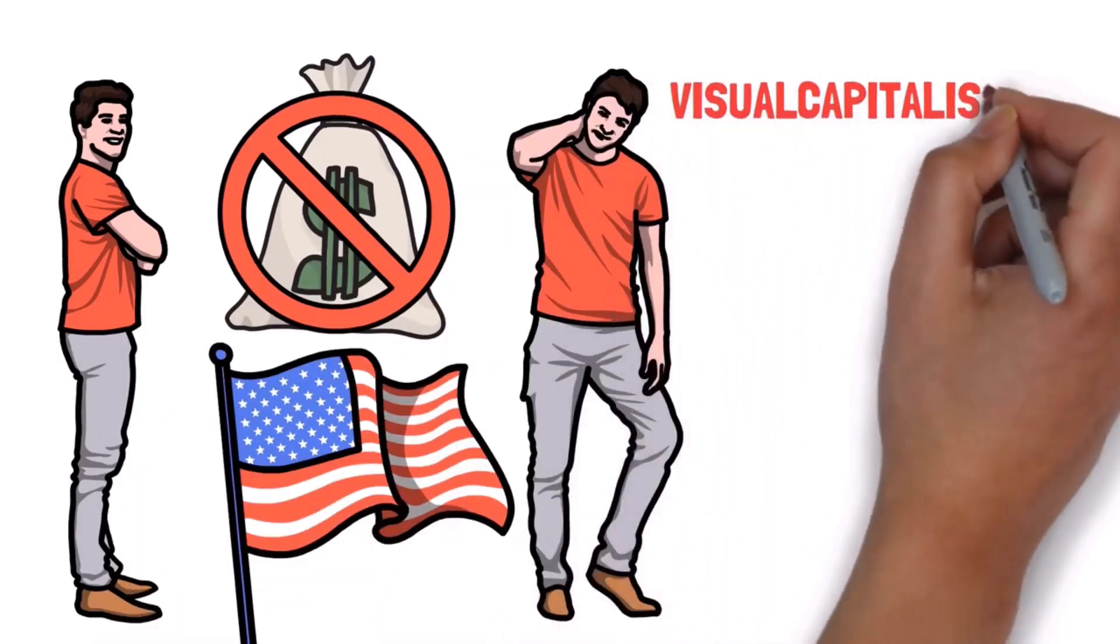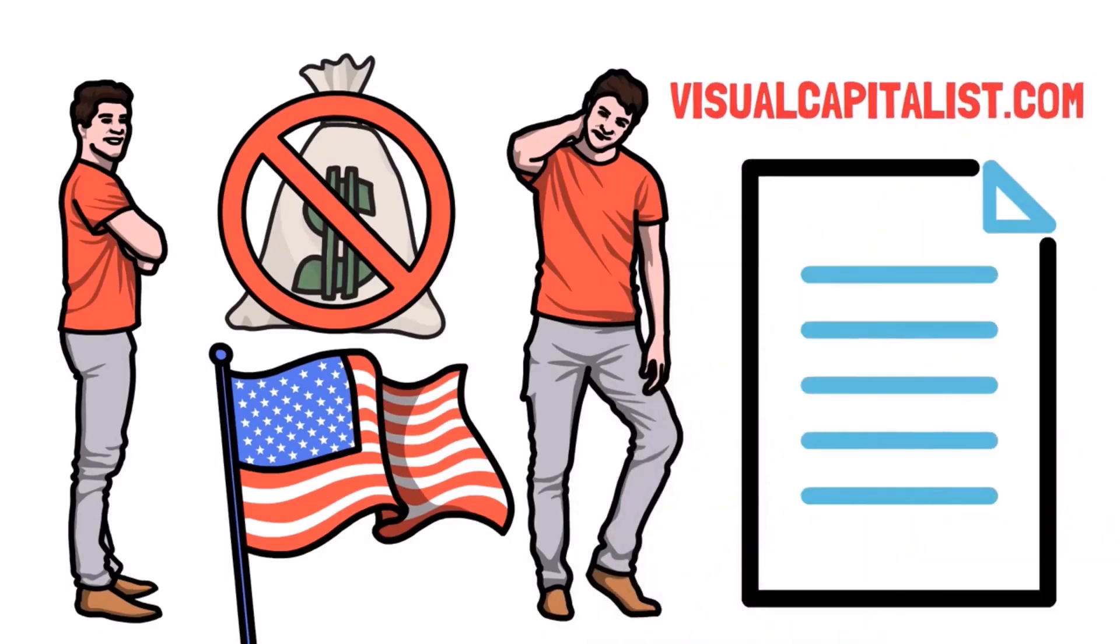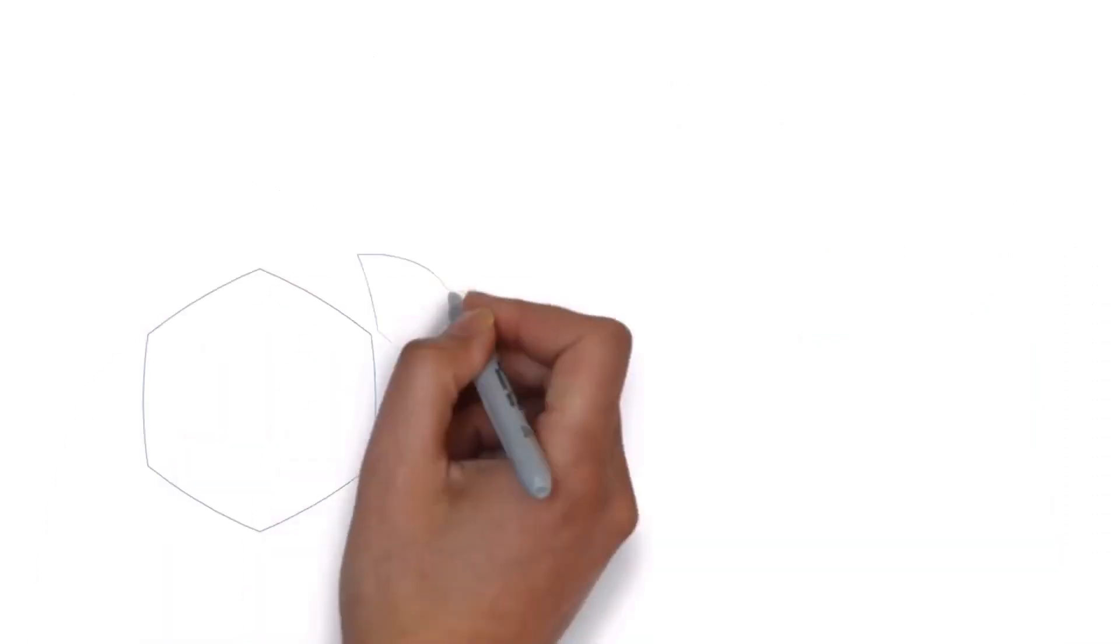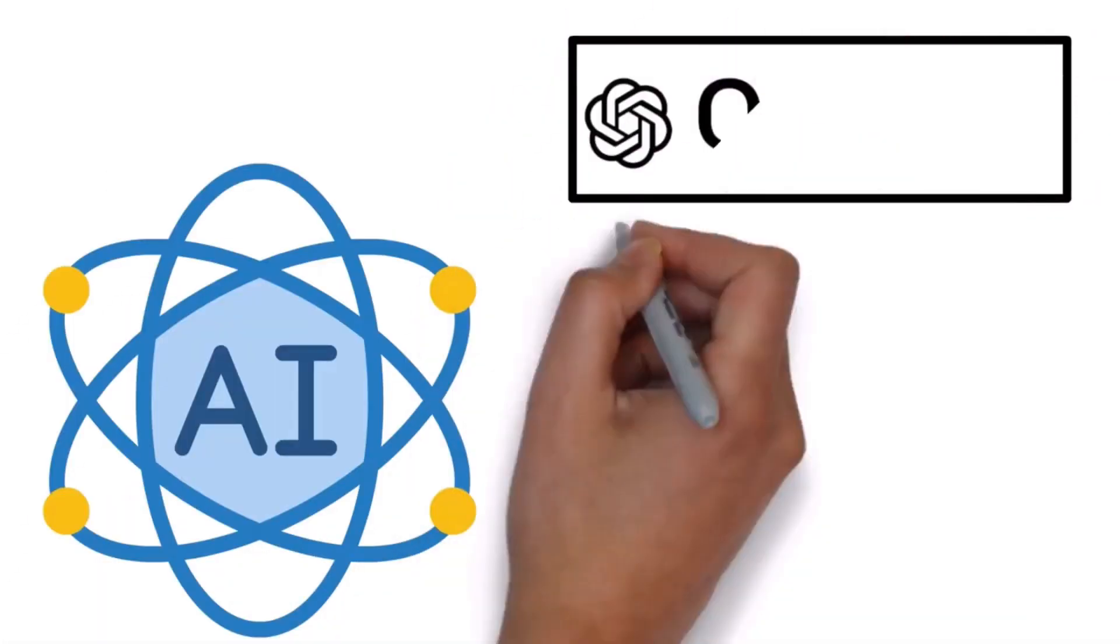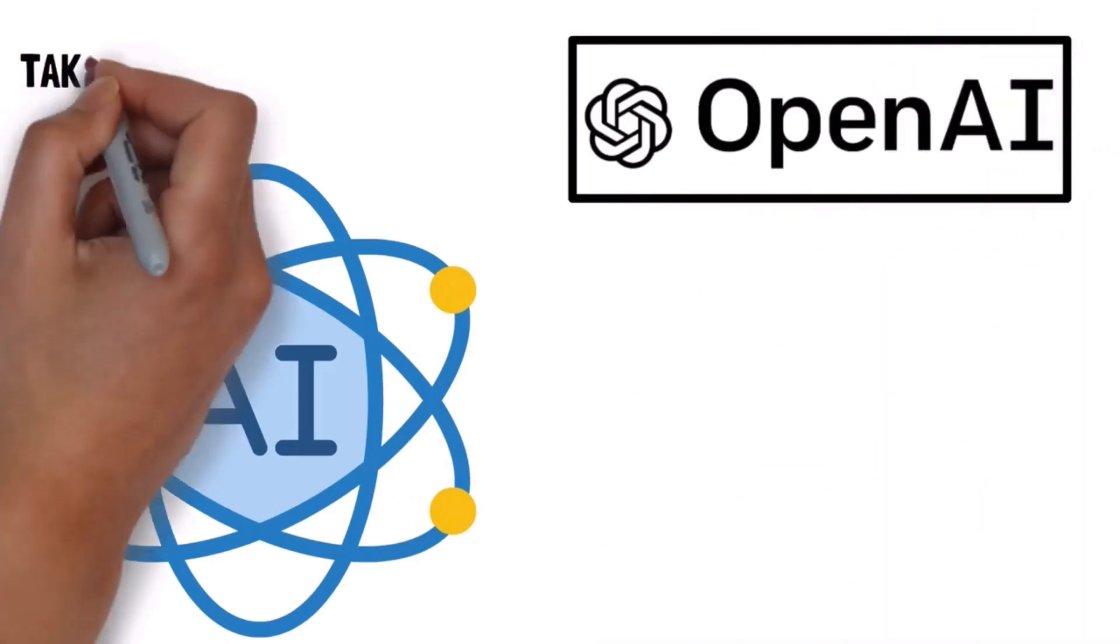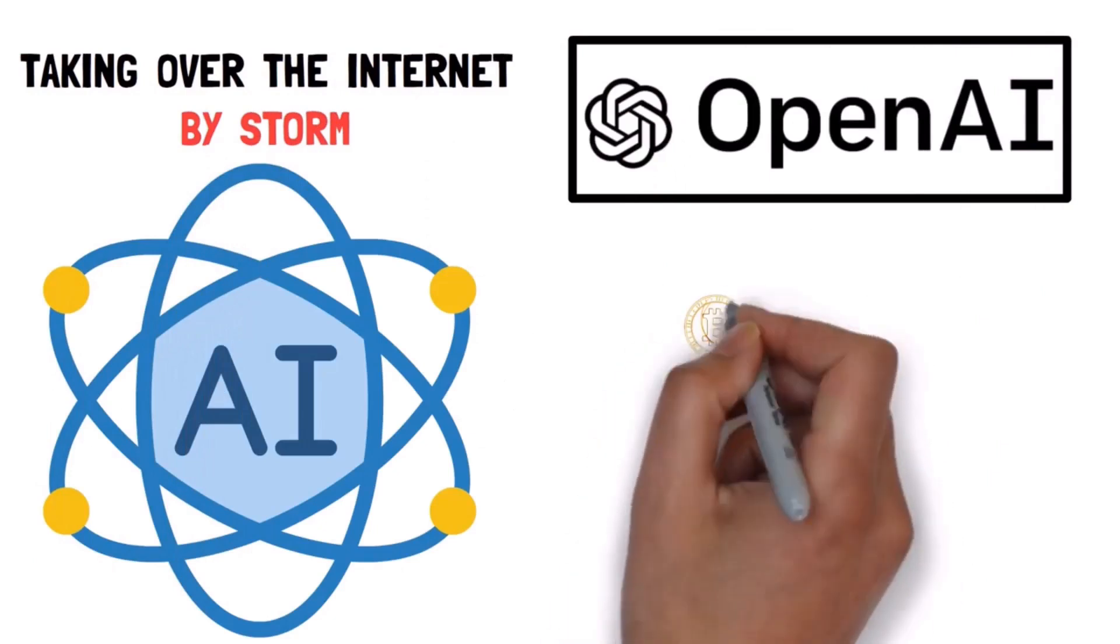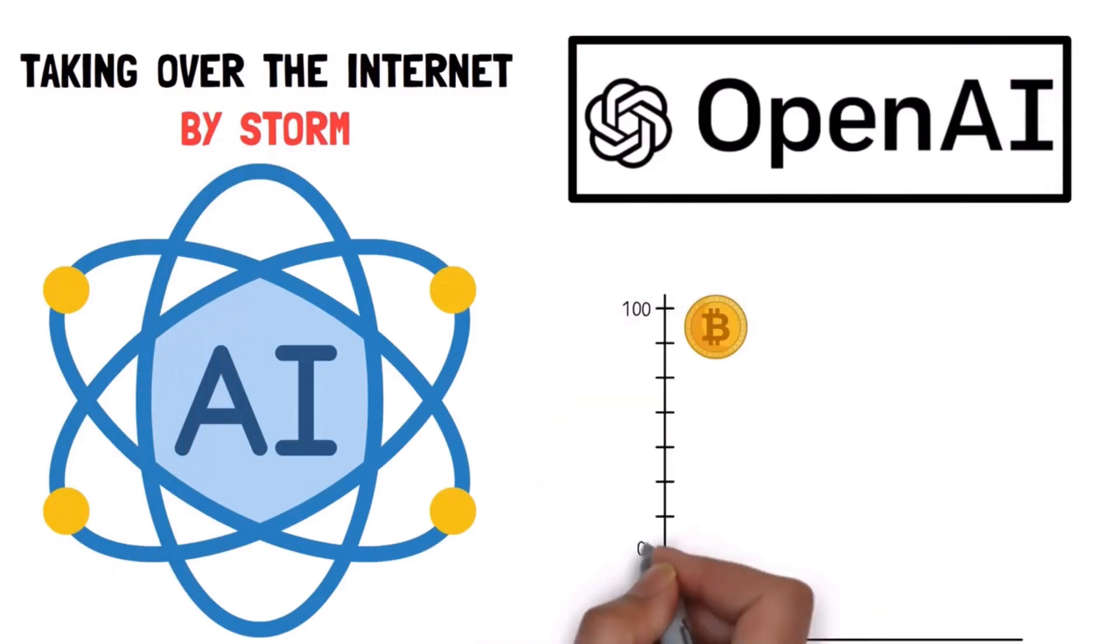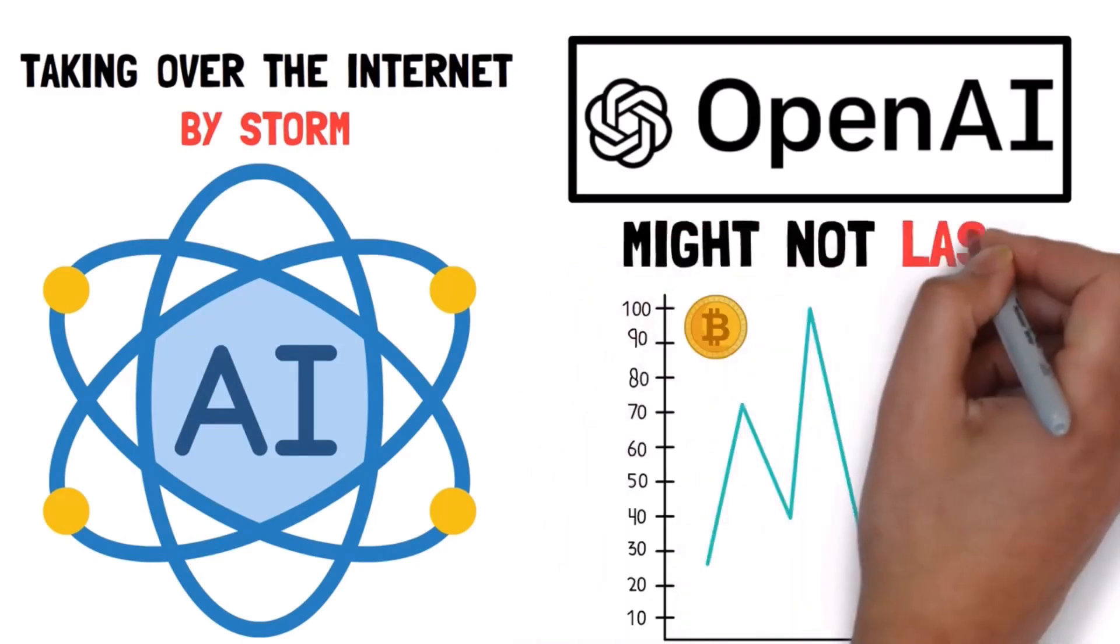Visualcapitalist.com has a really interesting prediction about what will happen in 2024. Artificial intelligence, for example, will pop up everywhere, and we're already seeing this with tools like ChatGPT, which is taking over the internet by storm. Apparently, the crypto winter will continue, and even though we're seeing Bitcoin slightly bounce up this year, it might not last.